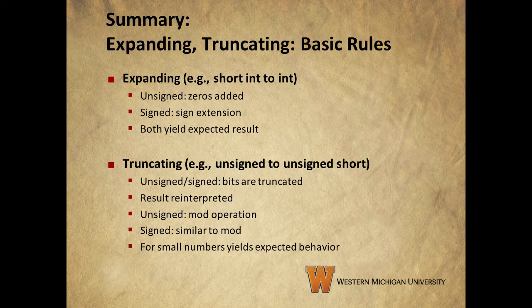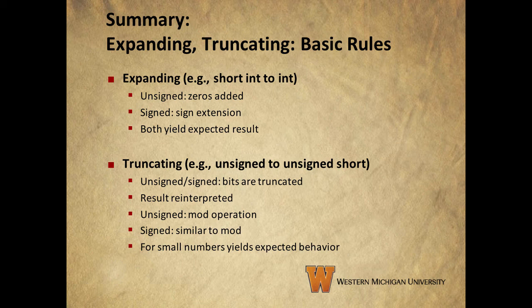For truncating, things are a little different. For both signed and unsigned integers, we truncate the bits from the higher order side and reinterpret the results. For unsigned numbers, this works the same as a mod operation — specifically, if we drop k bits, we get the result of applying mod 2 to the power of k to the original integer. Signed is similar, but the new most significant bit becomes the sign bit. This works as expected for small numbers, but for larger numbers the new most significant bit may end up being one, meaning the truncated number could differ in sign from the original. You can see the full explanation in section 2.2.7 on pages 81 and 82 of your book.